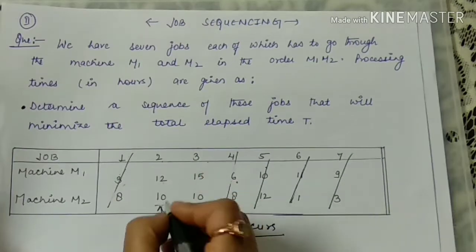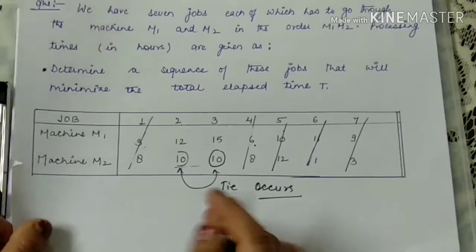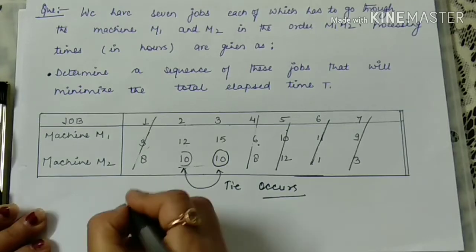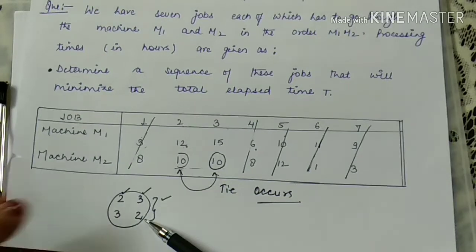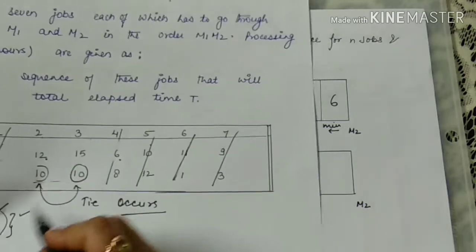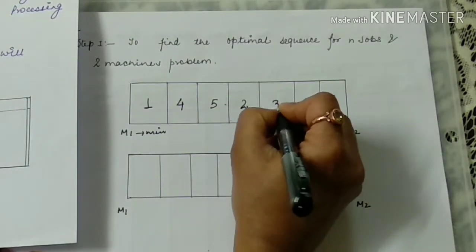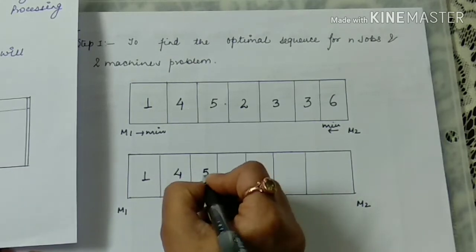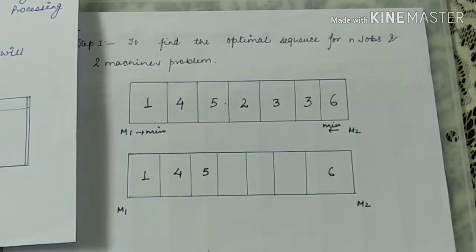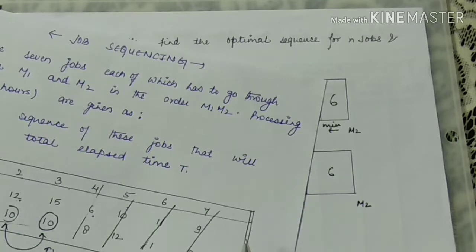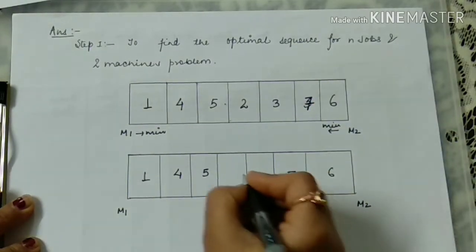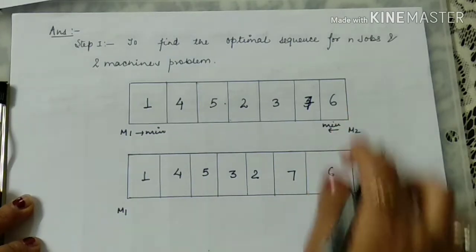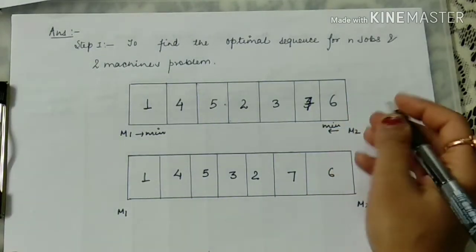How to resolve the tie? In the case of two jobs, the maximum number of sequences we can make is two: sequence 2,3 and sequence 3,2. So we process all sequences. First is 2,3 — I write 2 here and 3 here. So the two sequences we obtain are: 6, 4, 5, 3, 2, 7, 6 and 6, 4, 5, 2, 3, 7, 6. These are the maximum number of sequences; now we have to check for the optimal sequence.